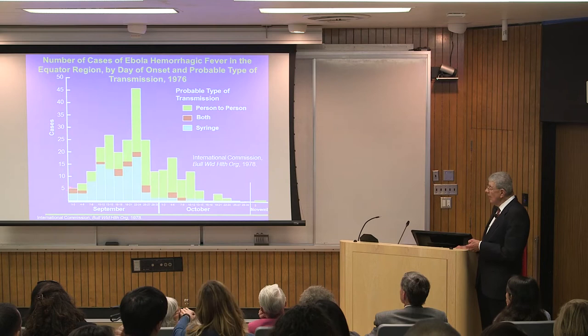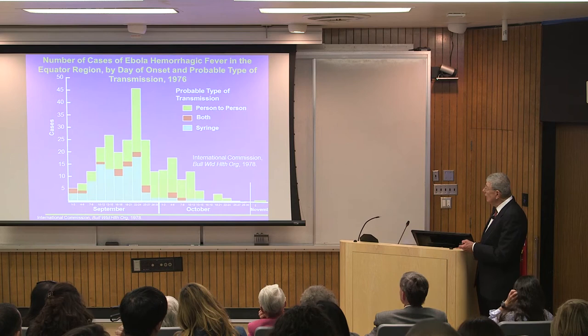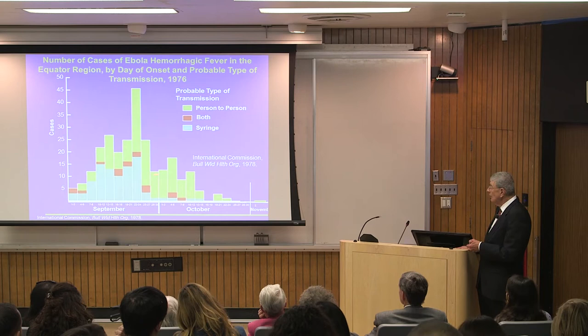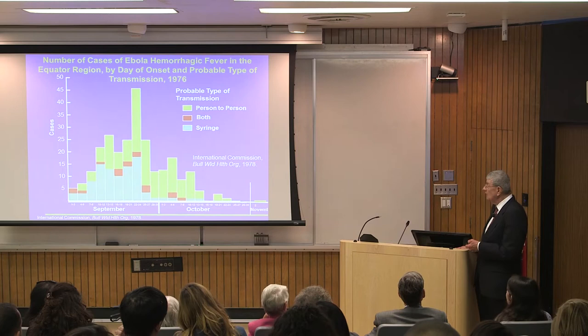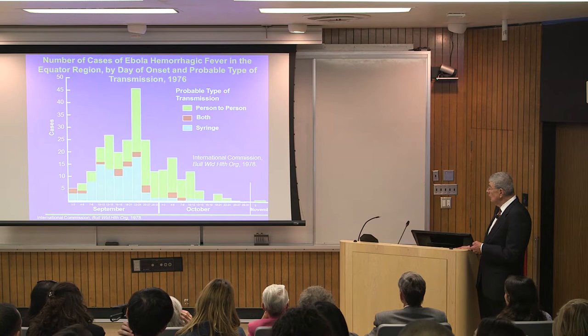Epidemiologically, early on the patients had received an injection, then went back to their villages and had person-to-person contact. At the end, when the remaining staff saw what was going on, they closed the hospital — the patients ran away. They knew the hospital was the source of the epidemic. Those who ran then infected others in the village, so the epidemic was over in early November. We had arrived, but we didn't know the epidemic was over.